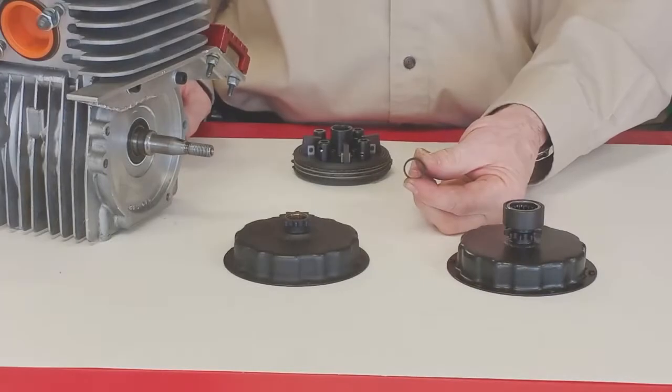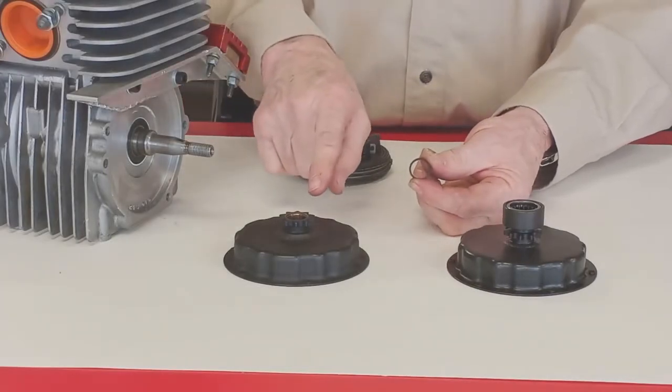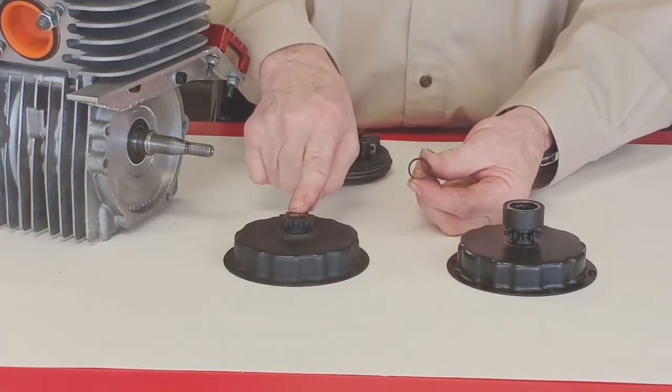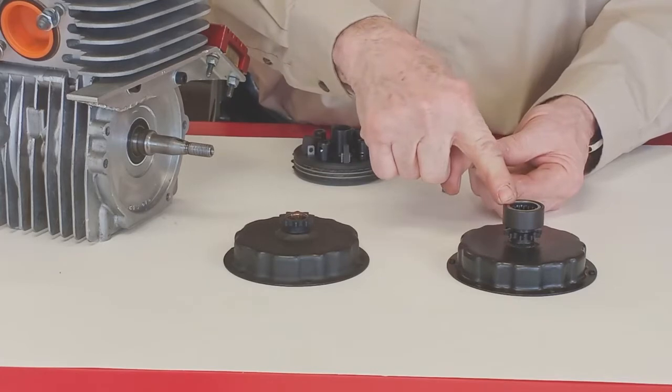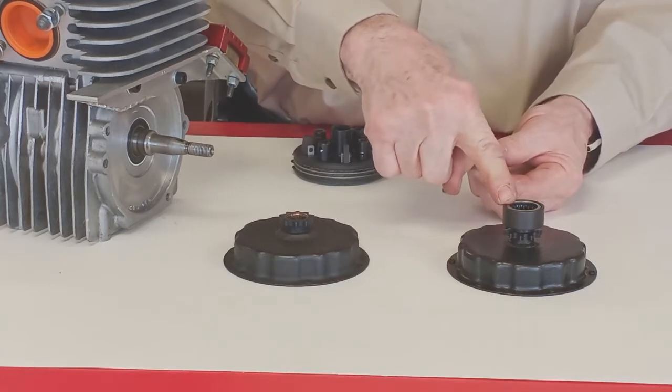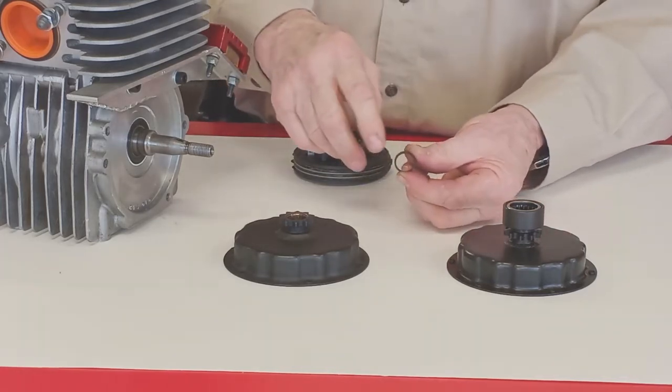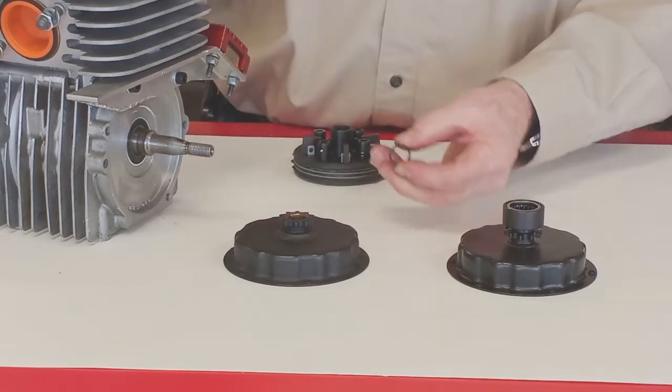There should be a spacer on the crankshaft before you install the clutch drum, if you're using a conventional clutch drum like this one. If you're using a drum with a needle bearing in it like this, you won't need the spacer. The spacer goes on the crank with the beveled edge towards the engine.